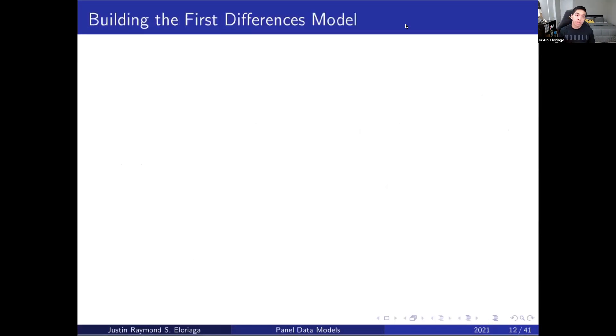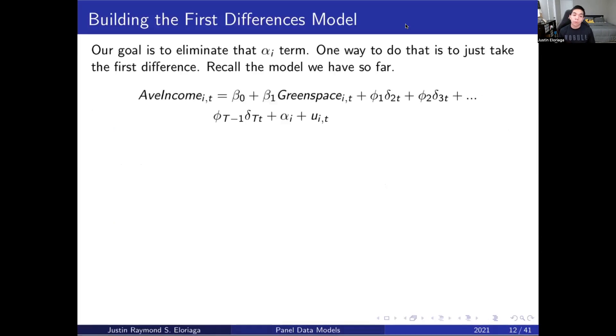The first stab at it is we build what we call the first differences model. Our goal is to eliminate that alpha_i term, and one way to do that is just to take the first difference. The definition of a first difference is simply you subtract the present minus its immediate past value.